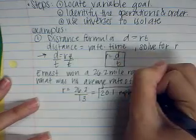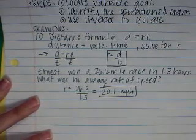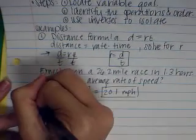And 26.2 divided by 1.3 is 20.1 miles per hour. Obviously, Ernest was not running. He was probably riding a bike, for example.